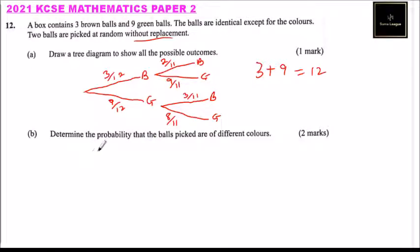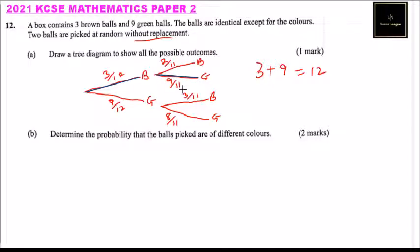Part B: Determine the probability that the balls picked are of different colors. That means they may be brown then green, or green then brown. You may pick a brown ball and then a green ball — they will be of different colors. The other option is you may pick a green ball and then a brown ball. So those are the two possibilities.